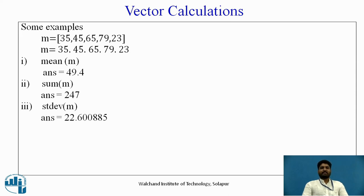In the same way, we can calculate standard deviation of m. The code for standard deviation or command for standard deviation is stdev in bracket round bracket m, we are calling m, the answer will be 22.600885.